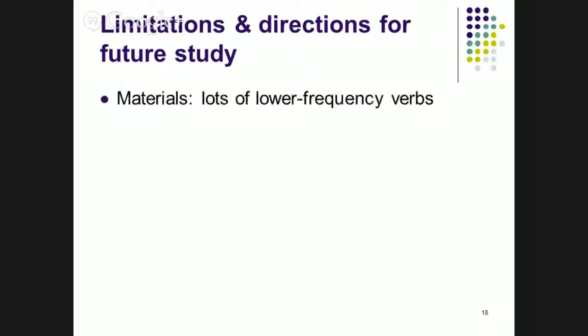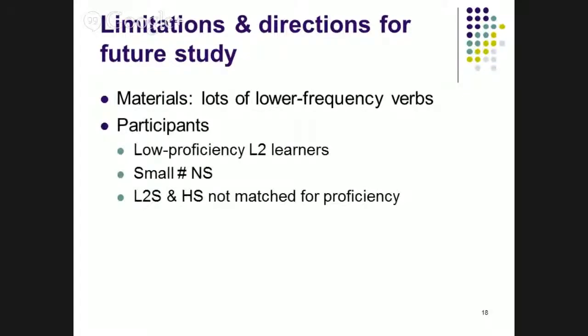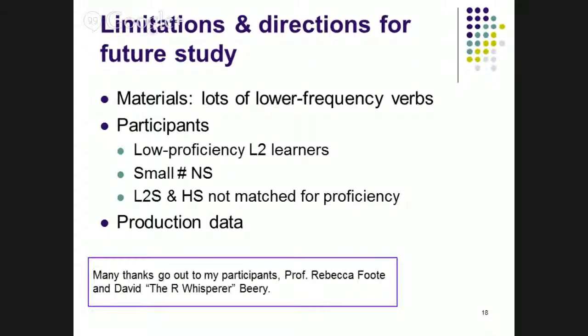So what are the limitations of this study, the direction for future study? As I said, I have lots of lower-frequency verbs. I'd like to consider, if I did a study like this again or on this topic, I would have a wider range of verbs. My participants, I want more higher-proficiency L2 learners. I want to probably triple the number of native speakers I have. I have several more that I haven't analyzed yet, but four is obviously not enough. And I'd like to at least match a subset of my second-language and heritage speakers for proficiency, so I could speak to what effect a certain level of proficiency had on both groups independently of their status as L2 or heritage speaker. These are production data. A lot of it had to be excluded because of that, either because of microphone problems or incorrectness. I'd like to do a comprehension methodology where people could get more right answers and I could look at more of their responses. And I'd like to thank my RPI and advisor, Dr. Rebecca Foote and David Beery, the R-Whisperer, for their tireless assistance in this project. Thank you very much.